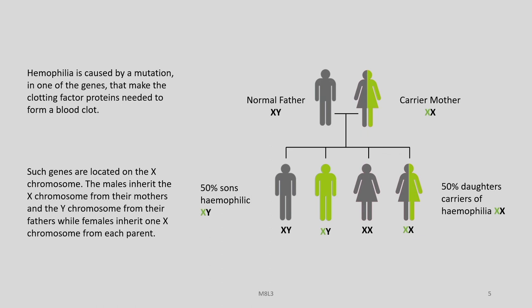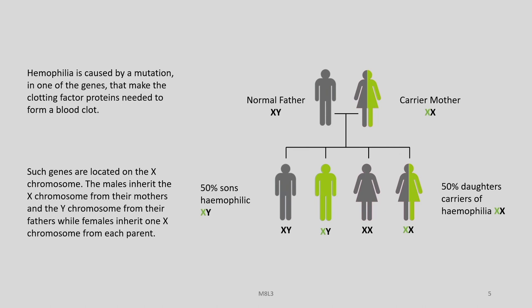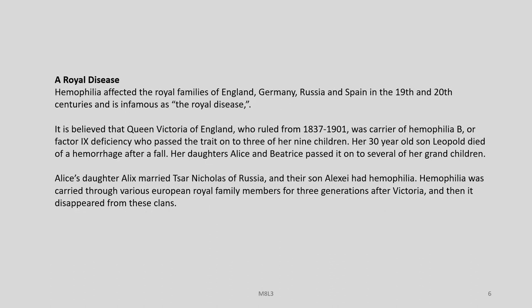This is in brief the genetics of haemophilia. The reason an individual with a mutated X chromosome has the disease is the dominance of the clotting factor genes on the X chromosome, against which there are no corresponding genes on the Y chromosome.